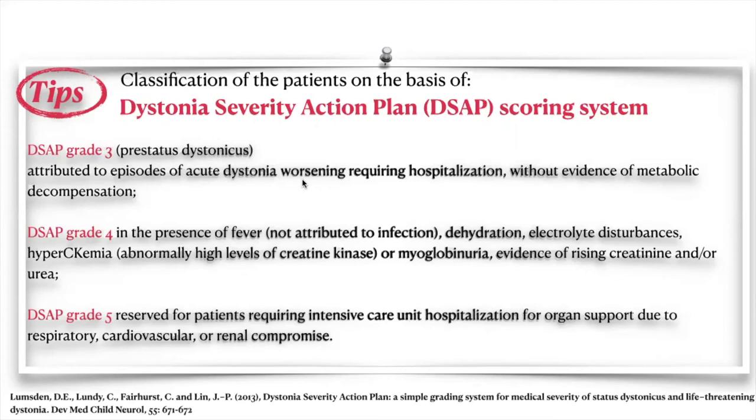The lack of an operative status dystonicus definition is the main problem in research on this condition. We therefore adopted a classification proposed in 2003 by Lumsden and co-authors, called the Dystonia Severity Action Plan scoring system. This is a simple grading system for medical severity of status dystonicus, and we considered grade three as pre-status dystonicus.